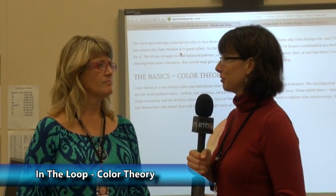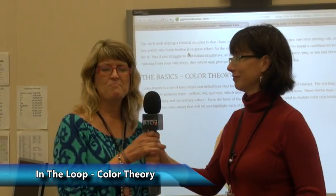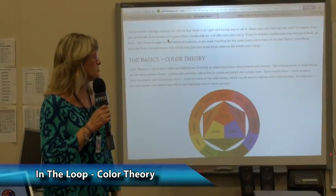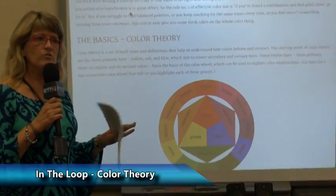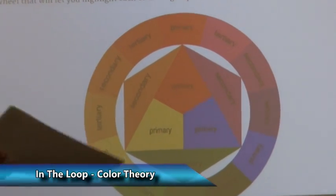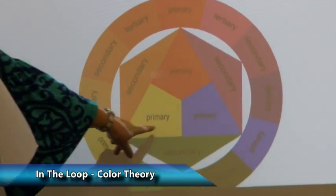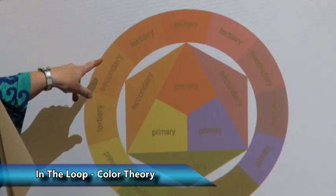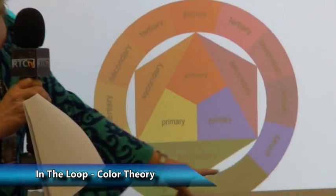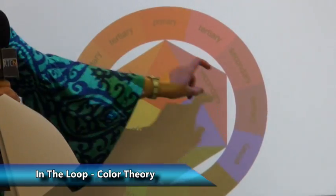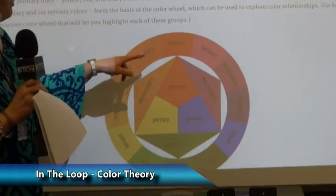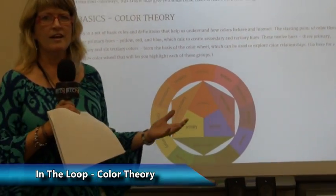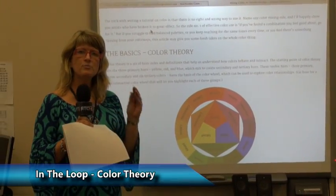So Sandy, can you tell us what the color wheel is? The color wheel we have right in front of us is very basic. You start with your primary colors — red, yellow, and blue — and those colors mix together to create your secondary and tertiary colors. Yellow and red make orange, yellow and blue make green, and blue and red make purple. You can also mix a primary with a secondary to get a tertiary. Color theory is all about how you put colors together.